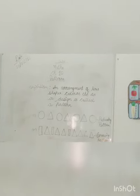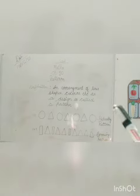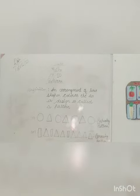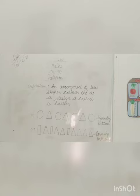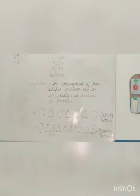Patterns. Definition of pattern is an arrangement of lines, shapes, colors, etc. as a design is called a pattern. Kisi bhi shape, line, or color ko kisi design mein dalna is called a pattern. Like you can see here is...